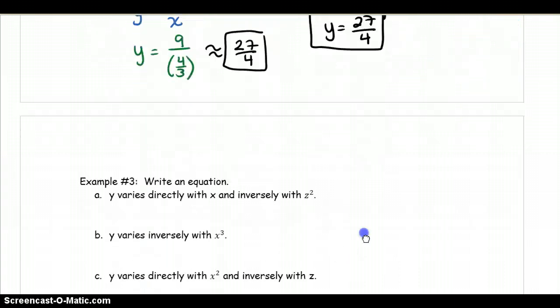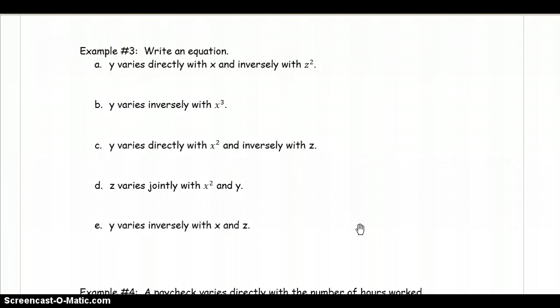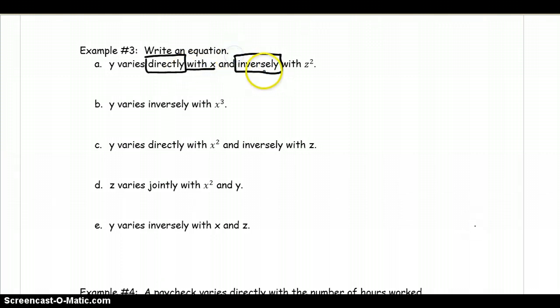Let's keep going. Now here in example three it says write an equation, and it's giving you a different option. First one it says y varies directly. So as soon as I think of directly, I'm thinking that the k value is going to be multiplied. So here's what we're with x. And inversely, because I'm thinking k value is going to be divided by z squared. So here's what that looks like. y equals k times x, because we're doing directly. So this is multiply. And inversely is division. So we have divided by z squared. Notice however, though, that the equation has one k value.